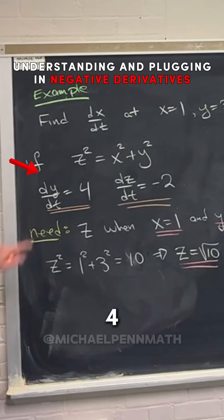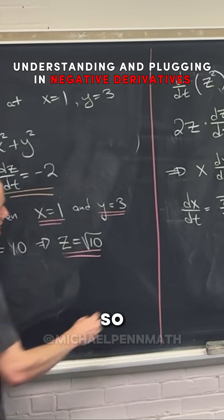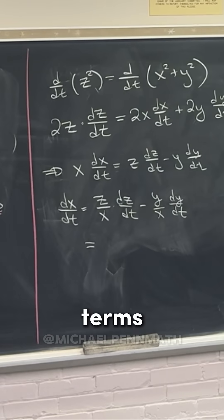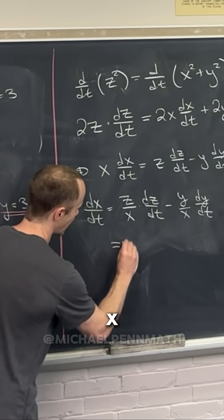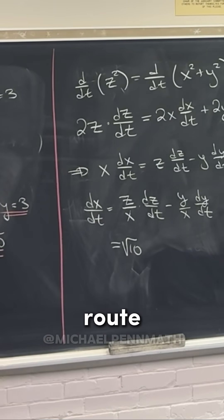So let's see, dy/dt is 4, dz/dt is negative 2, so let's take care of maybe those first terms first. So let's see, z is root 10, x is 1, so z over x is root 10 over 1 or just root 10.